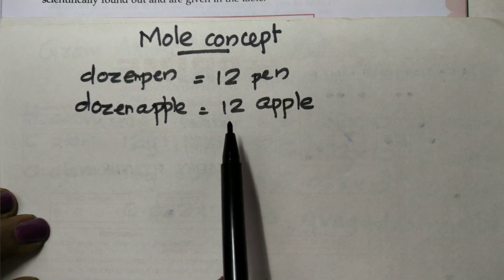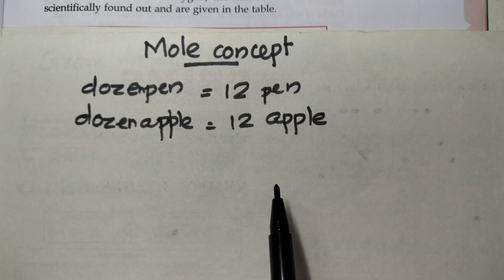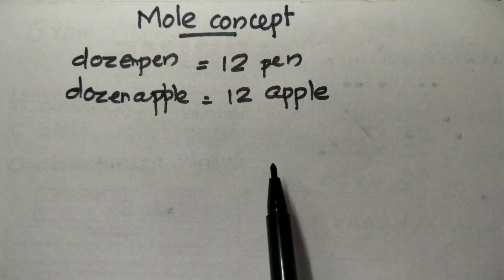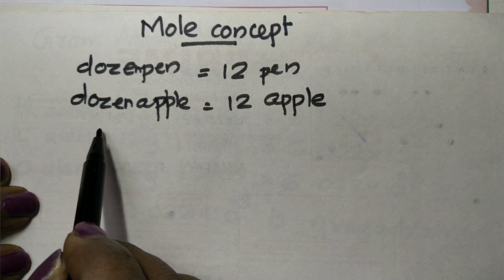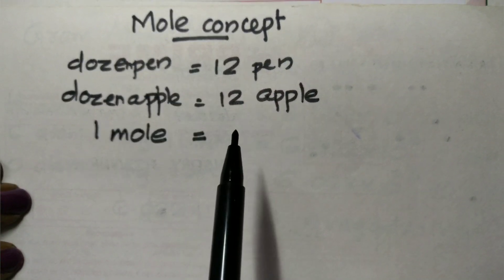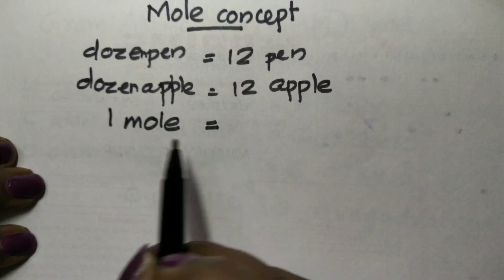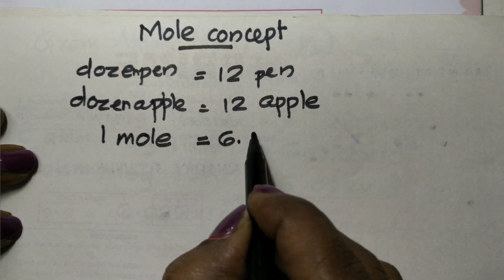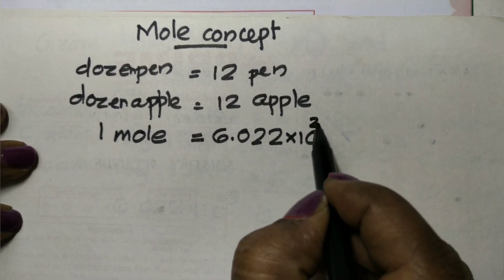So let's understand the analogy. If we use the term 'dozen,' we write 10 — actually, a dozen means 12. Using 15 or increasing by 10 in a group — similarly, the Avogadro number is 6.022 into 10 raise to 23. Just like a dozen represents 12 items, a mole represents 6.022 into 10 raise to 23 particles.